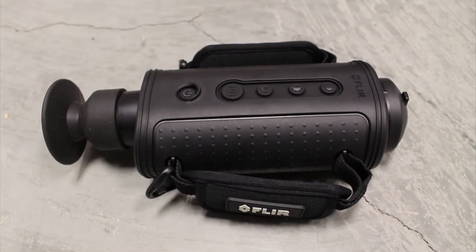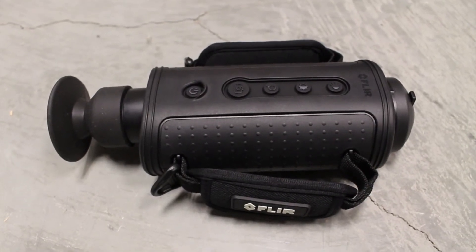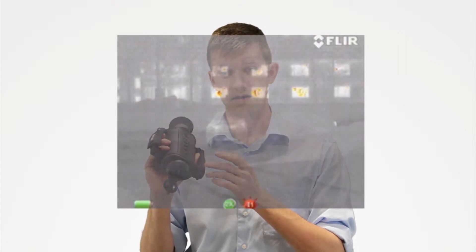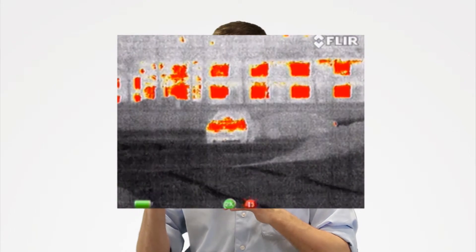This is the patrol model. There's also a command version that will record photos and videos onto an SD card. This has a two times digital magnification and then three polarities: white hot, black hot, and then Instalert which is a red highlight.